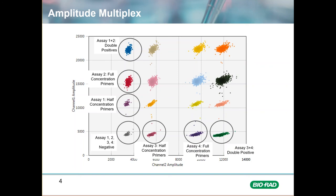There are numerous higher order clusters having different combinations of positives, with the cluster in the top right having droplets that are positive for all four targets.